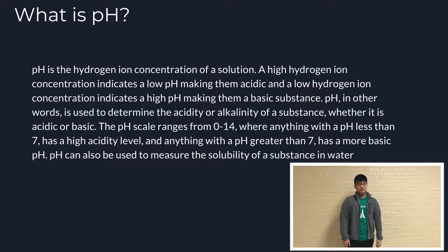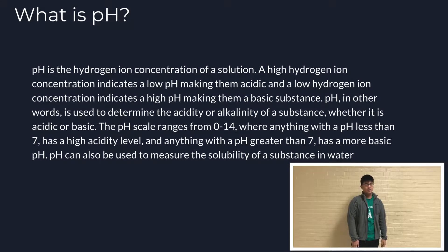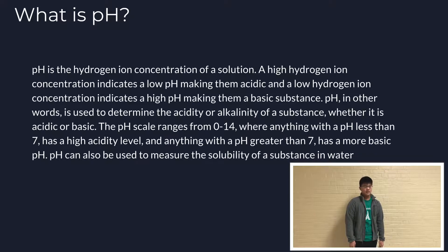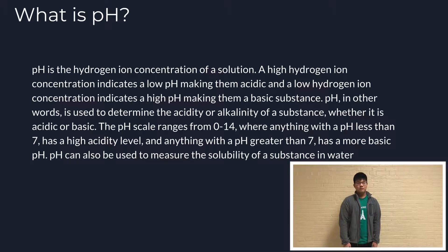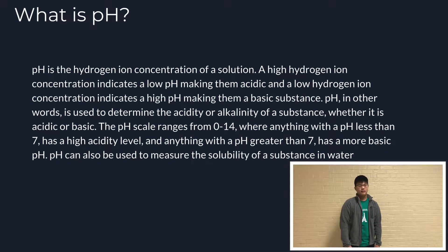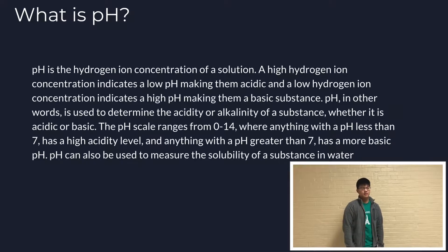pH is the hydrogen ion concentration of a solution. A high hydrogen ion concentration indicates a low pH, making it acidic, and a low hydrogen ion concentration indicates a high pH, making it basic. pH is used to determine the acidity or alkalinity of a substance. The pH scale ranges from 0 to 14, where anything with a pH less than 7 is acidic and anything greater than 7 is basic.